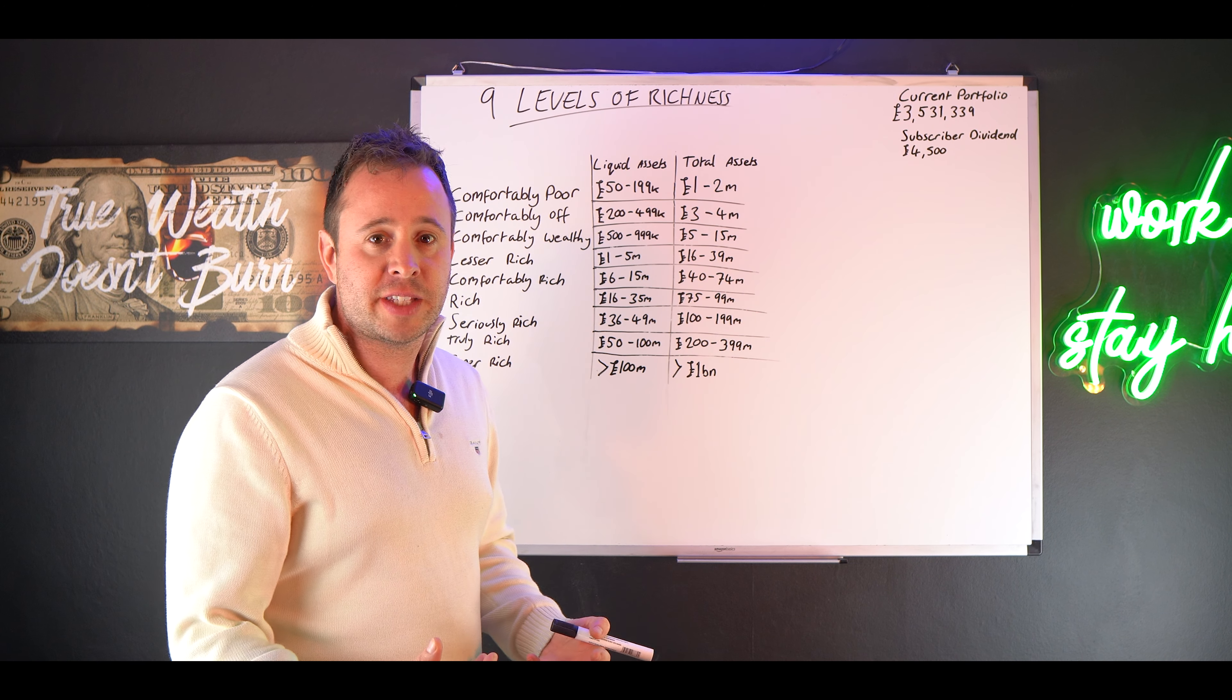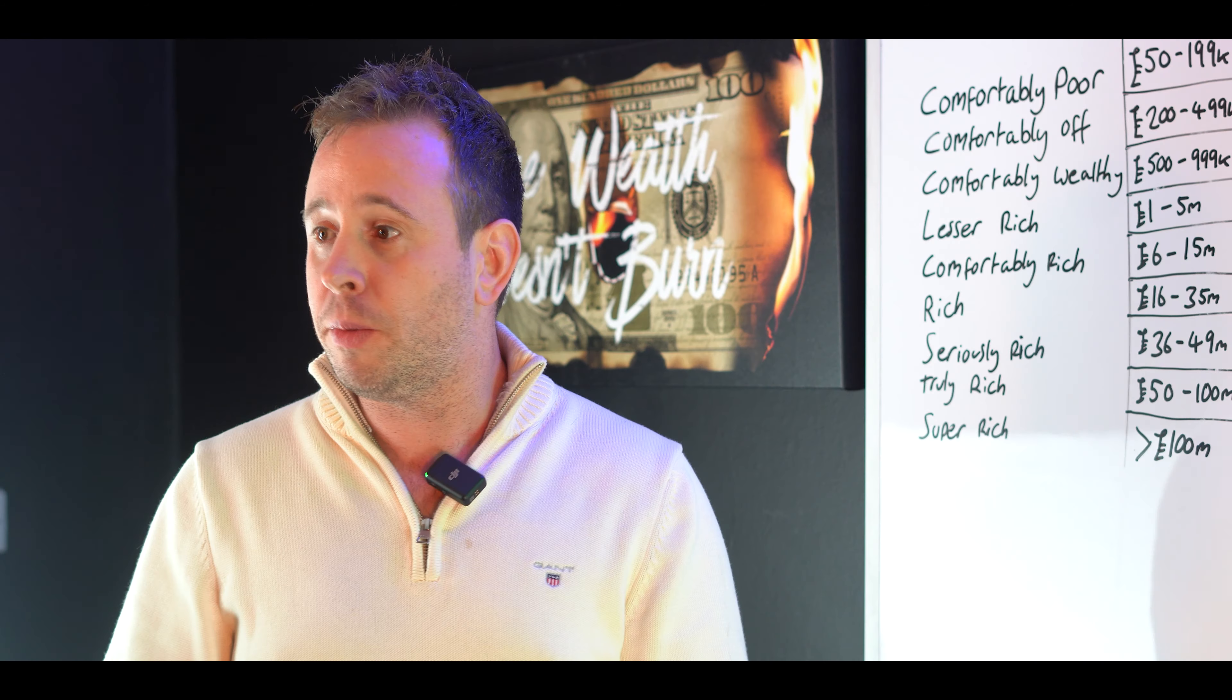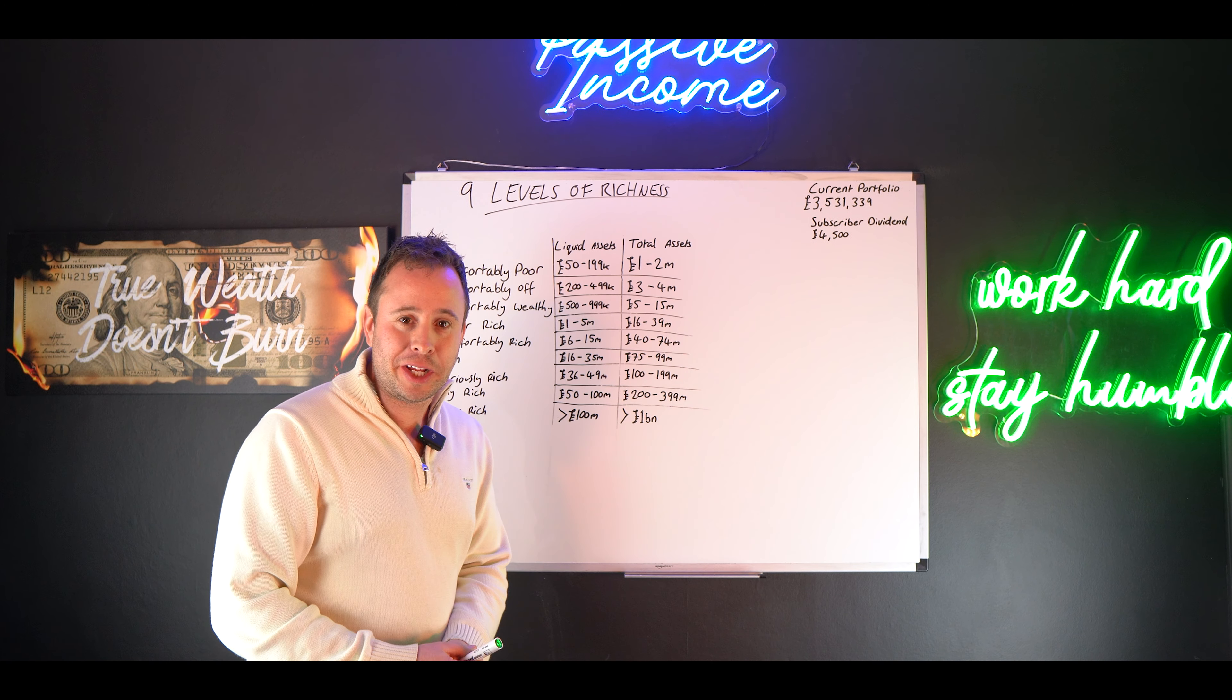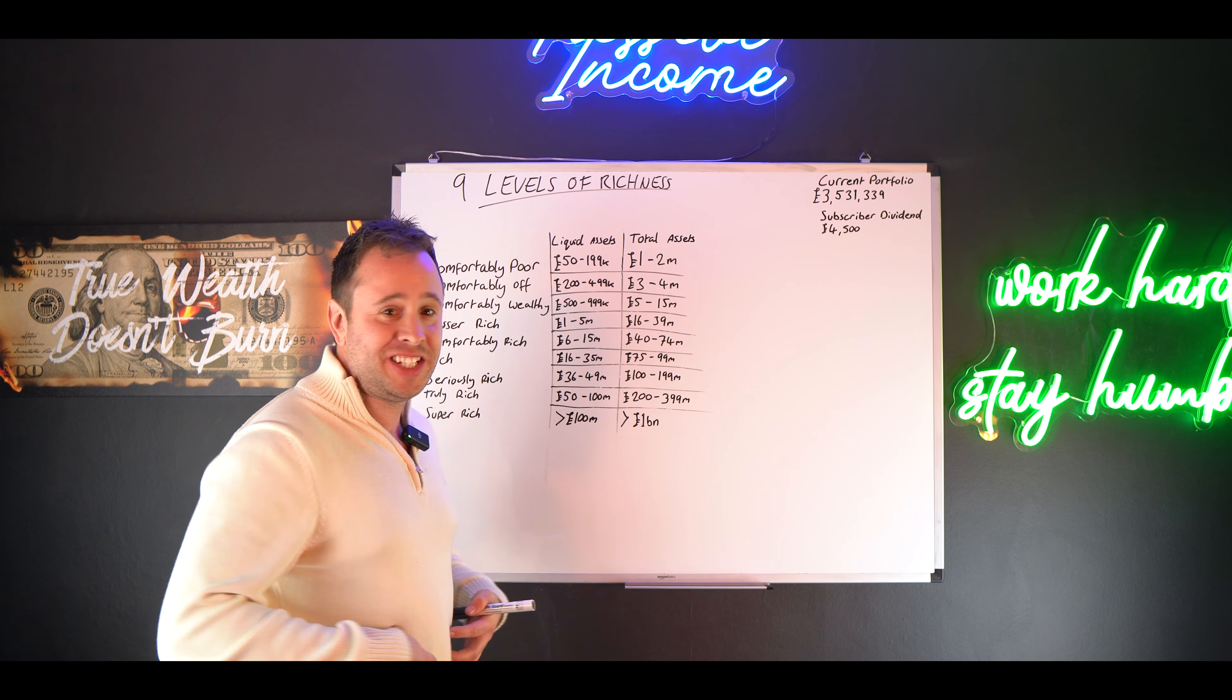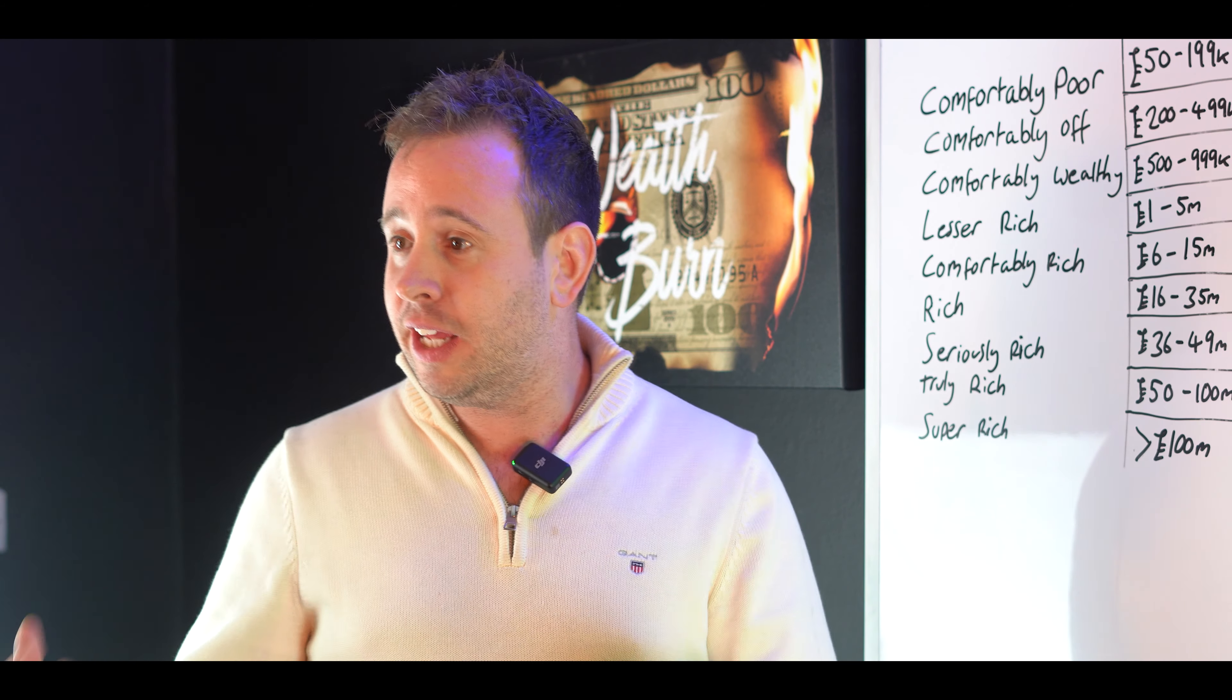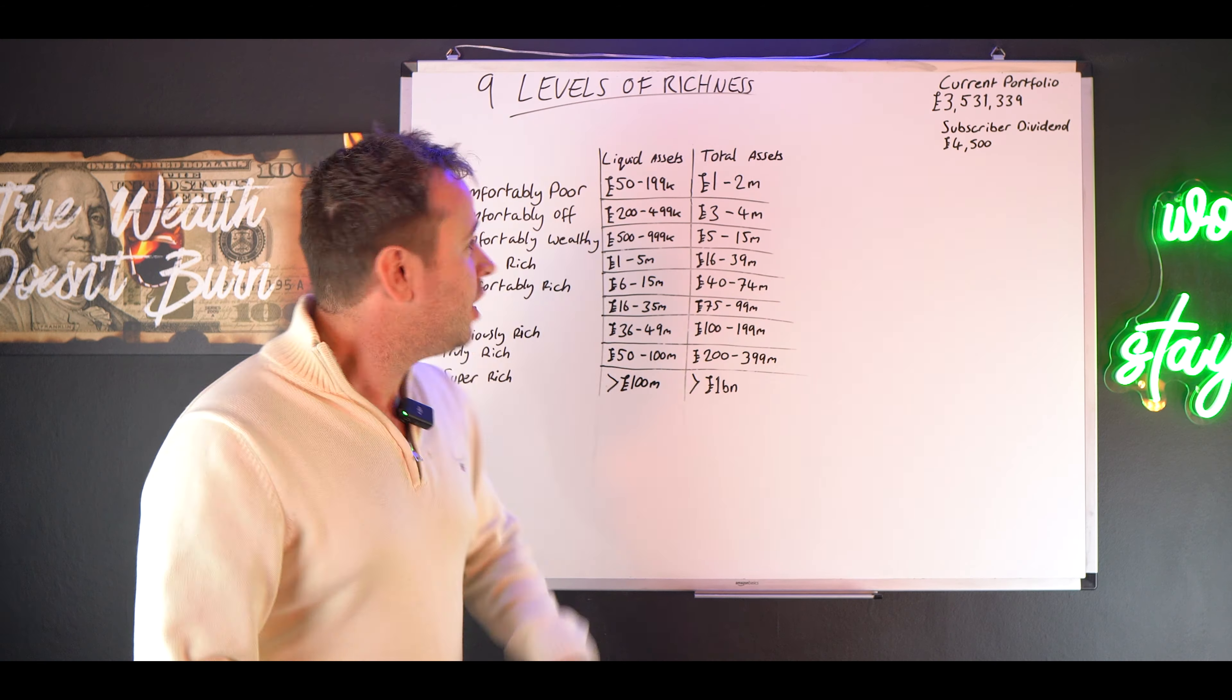But let's get into the nine levels of richness. This was written by Felix Dennis, a publisher best known for the British publications PC Shopper and Maxim. I think a lot of this stuff might be a little bit controversial and people might feel a bit offended, but I thought it was important to get it down and go through it. I tend to actually agree with this.